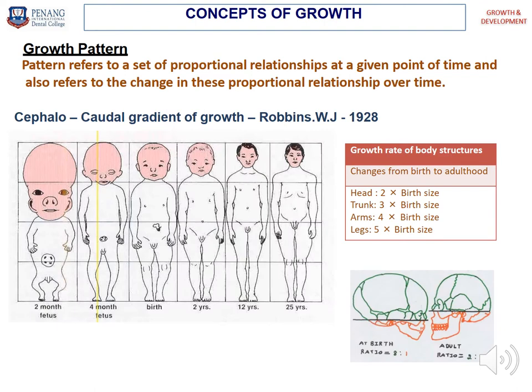The next concept is growth pattern. Pattern refers to a set of proportional relationships at a given point of time and also refers to the change in these proportional relationships over time. This picture is the Cephalocaudal gradient of growth by Robbins W.J. in 1928. It shows the changes in body proportion from two months of fetus and four months fetus up to maturity during adulthood. Note the large size of the head in relation to the rest of the body at birth.